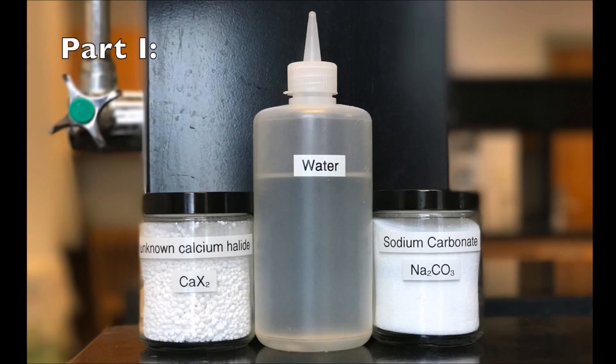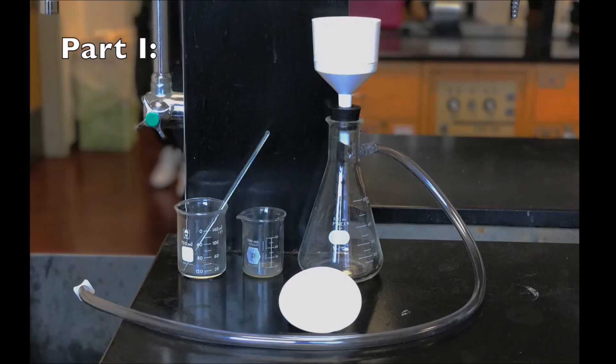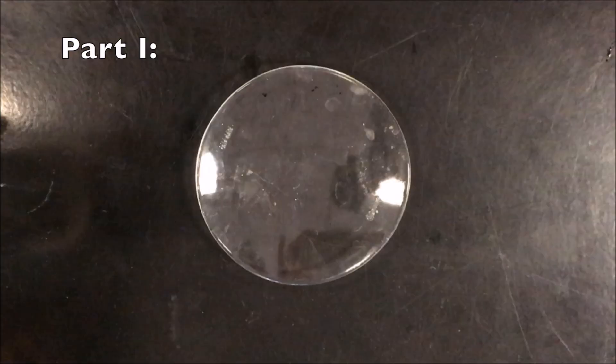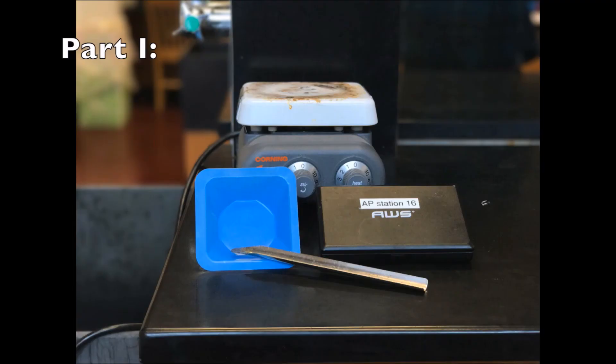For part 1 you'll need unknown calcium halide, water, sodium carbonate, 200 ml or 150 ml beaker, a stirring rod, sidearm Erlenmeyer flask, filter paper, plastic Buchner funnel, a watch glass, a scale and labels, and a hot plate.